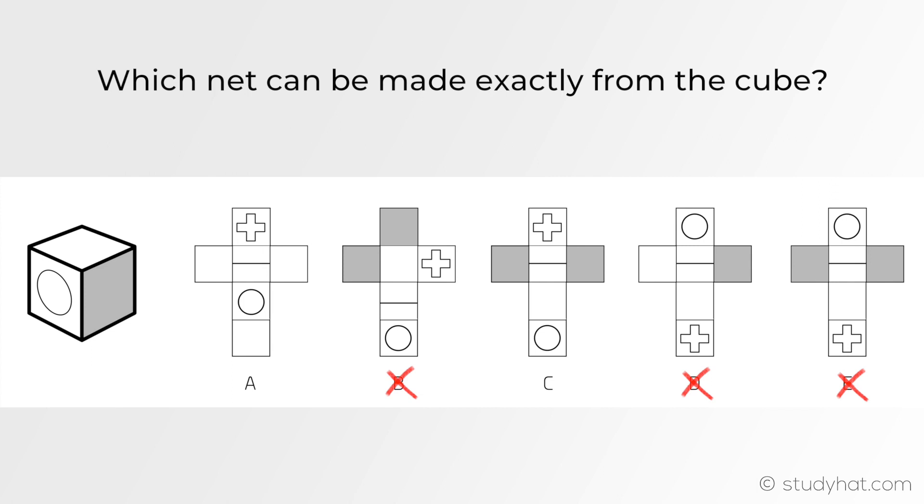Looking at it if we fold down the circle and rotate it yes both these bottom two faces will be aligned however A doesn't have a grey face on the net therefore it can't be the right answer leaving us with C.